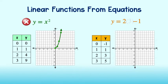We will now plot these points on the coordinate plane. Drawing a line through these points, we see that it is a straight line. It also passes the vertical line test. Therefore, the equation y equals 2x minus 1 does represent a linear function.